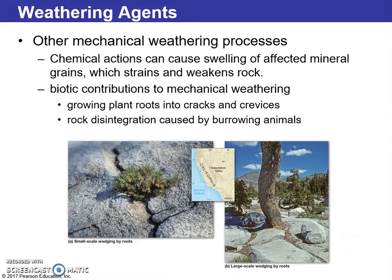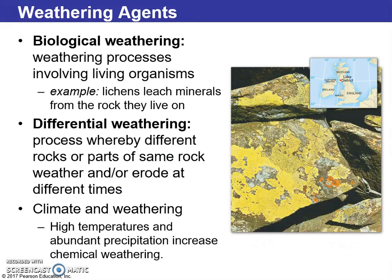Other mechanical weathering processes include chemical actions and biotic contributions to chemical weathering. Biological weathering involves living organisms growing on or within rocks. Differential weathering occurs when rocks or parts of a rock erode at different rates due to different hardness or composition, causing them to weather differently over time. When compositions are essentially the same, that can also cause some movement.